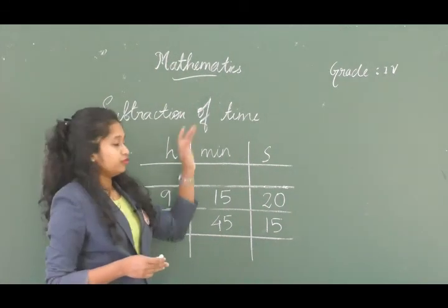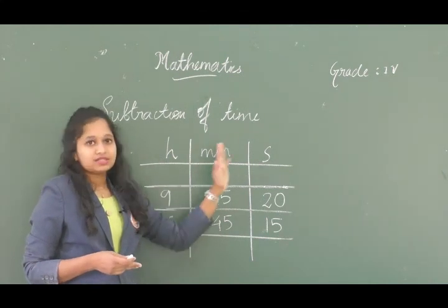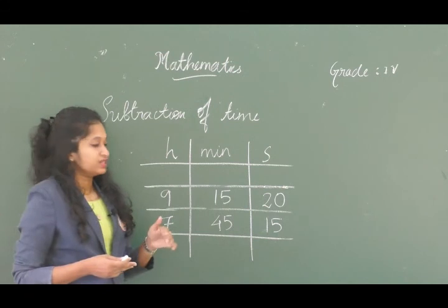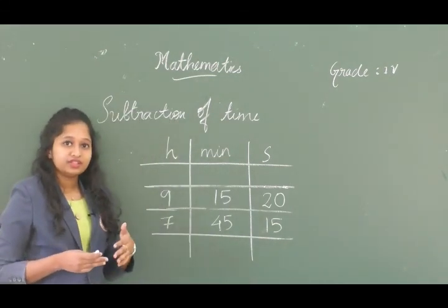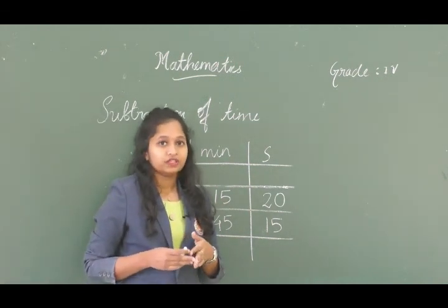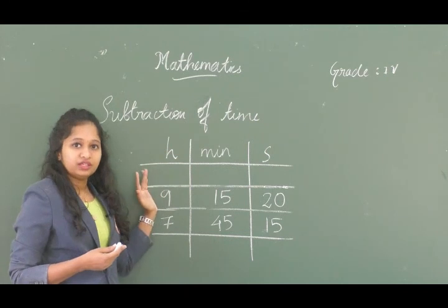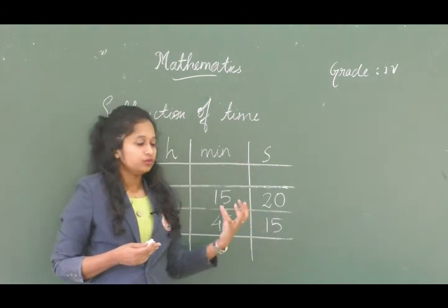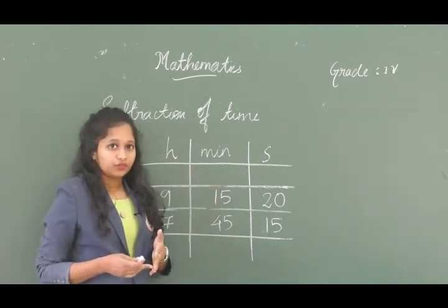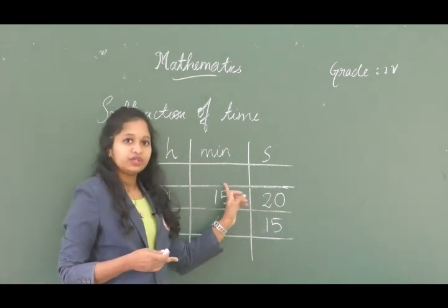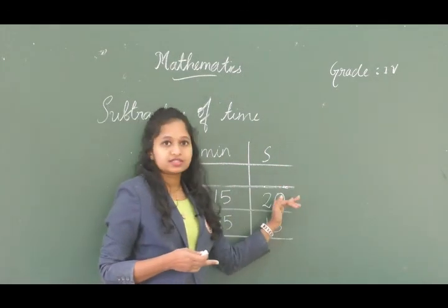Now let's look at subtraction of time. Make columns for hours, minutes, and seconds. When the number to be subtracted is larger than the number above it, take a borrow from the left column. If we borrow to the seconds column, we take 1 from the minutes — and 1 minute equals 60 seconds — so we add 60 to the seconds.